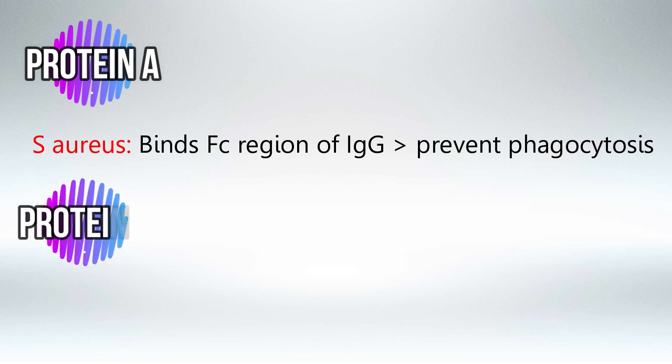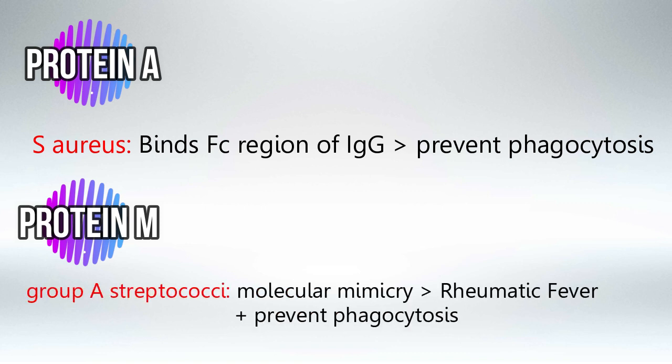Next we have Protein M, used by Group A Streptococci. It plays a major role in molecular mimicry in rheumatic heart disease and rheumatic fever, and also prevents phagocytosis. Just remember that Protein M is for mimicry — mimicry starts with M.